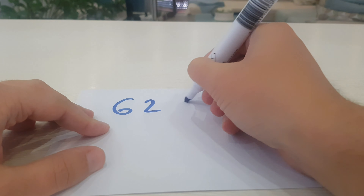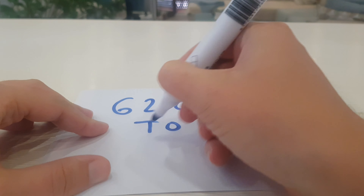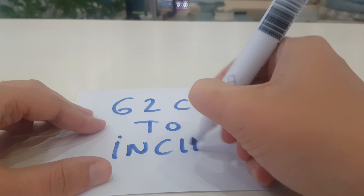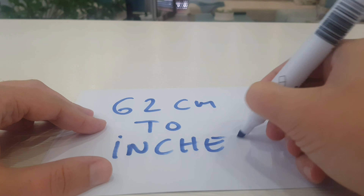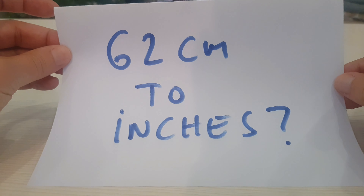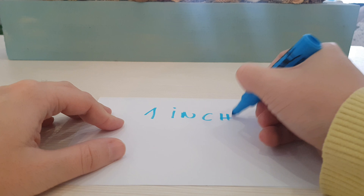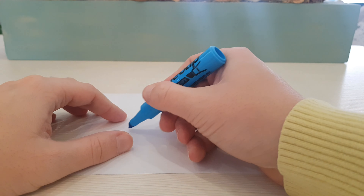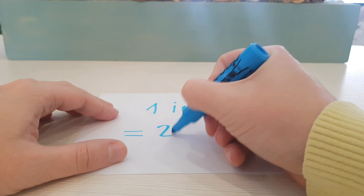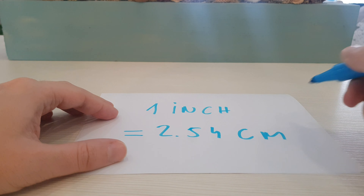In this video I will show you how to convert 62cm to inches. Here is the formula: 1 inch equals 2.54cm.